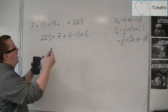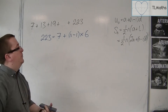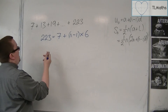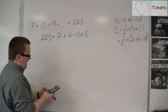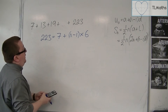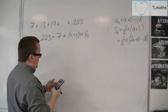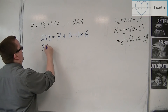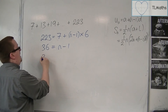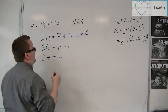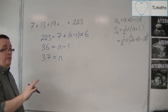So I need to rearrange this formula to get n equals, and that will tell me how many terms there are. I can take 7 from both sides — 223 take away 7 is 216 — then divide both sides by 6, and I get 36 is equal to n minus 1, so n must be 37. There are 37 terms in this series.